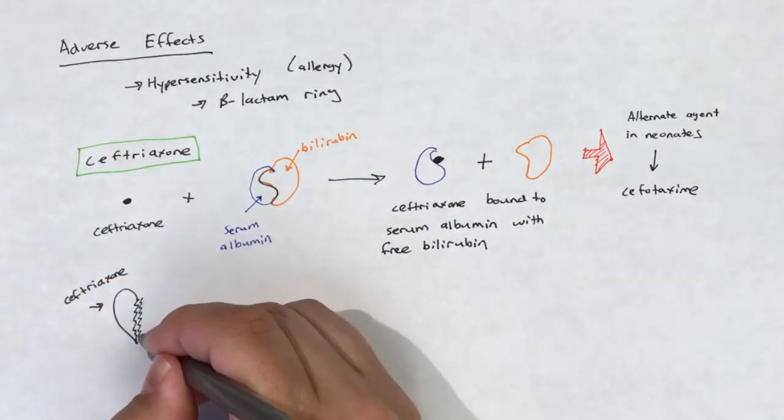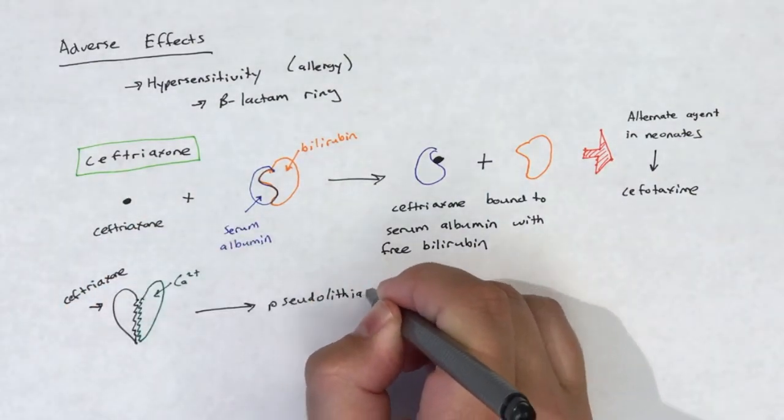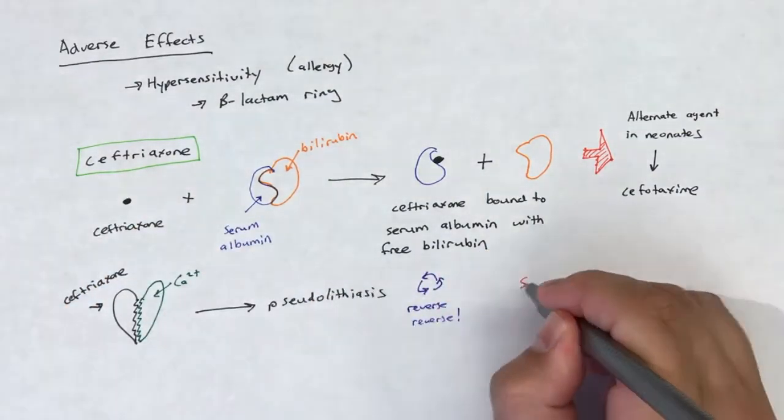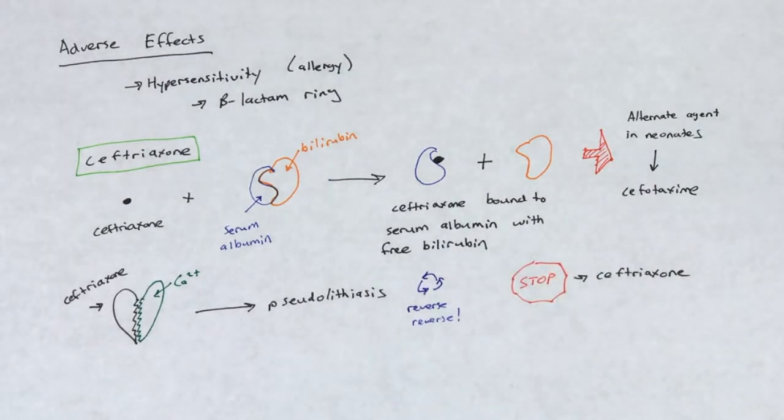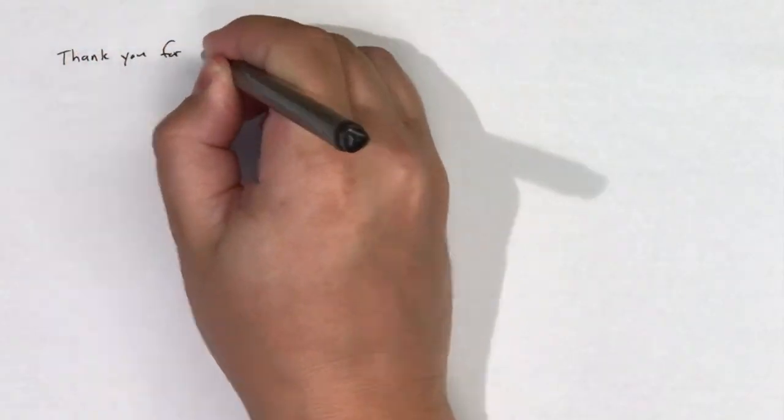Due to its high affinity for calcium, ceftriaxone can also lead to biliary pseudolithiasis. This adverse effect can be reversed by discontinuation of ceftriaxone administration. This concludes the video.